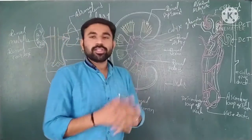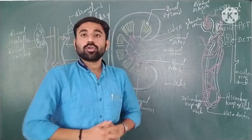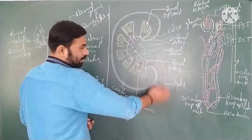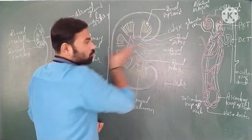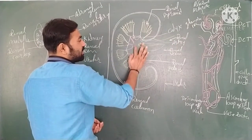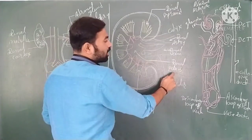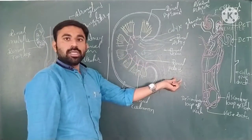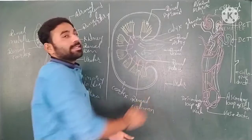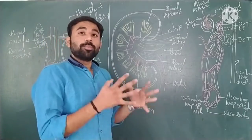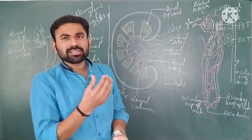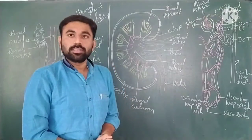Within the renal pyramids, uriniferous tubules are arranged. The uriniferous tubules are also known as nephrons. Below the hilum there is a space where urine is accumulated, known as the renal pelvis. From the renal pelvis upward there are stalk-like structures called calyces — calyx is singular, calyces is plural — and the renal pyramids are situated on the calyces.